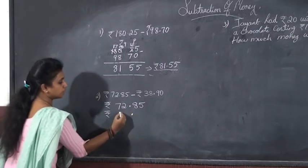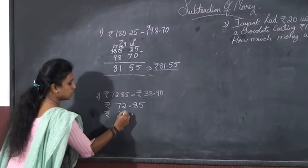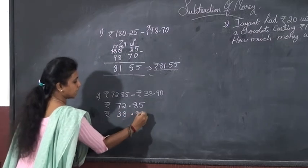You want to put the dot one below the other. And, to the left of this dot, it is 38. And, to the right, it is 90.